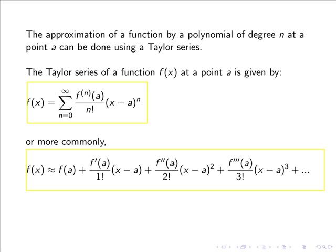So as you can see, there is a very clear and repetitive pattern occurring: the nth derivative evaluated at point a divided by n factorial, multiplied by (x minus a) to the power of n.